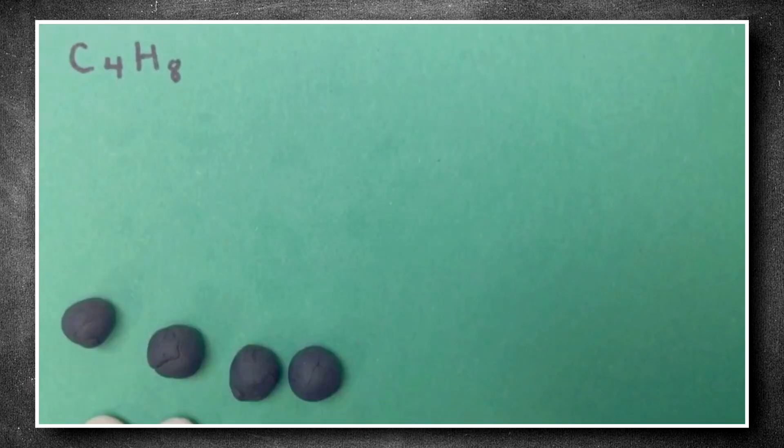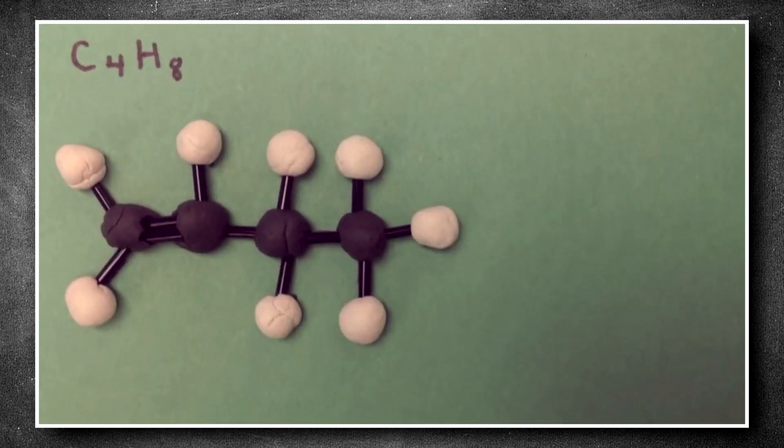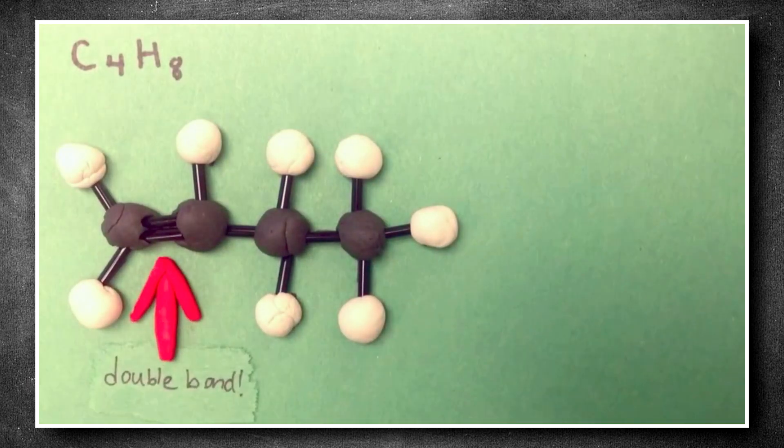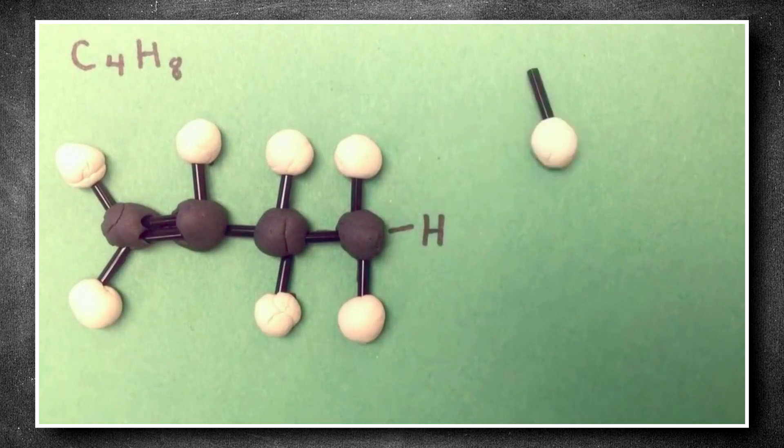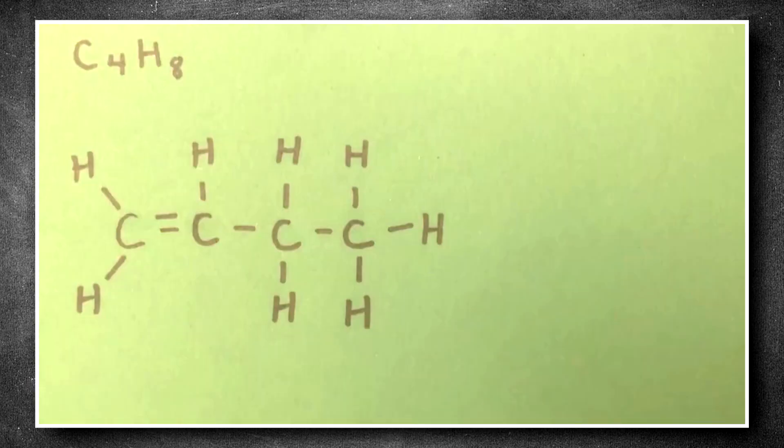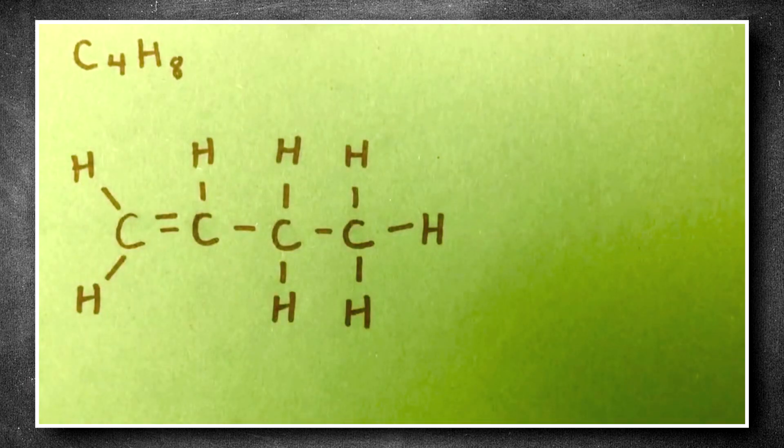This molecule has a few possible structures. Here's one as an example. Note that this molecule has a double bond. Our molecules leave to reveal a written representation. The different elements are represented by their symbols. One line shows a single bond, and two lines show a double bond.